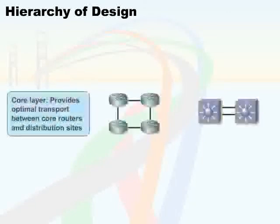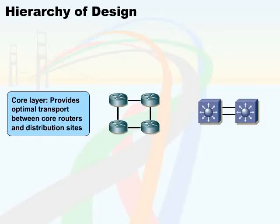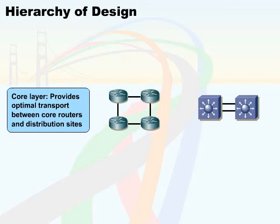There's a core layer, which is your true backbone that provides optimal transport between core routers or distribution sites. Typically, this is going to be the center point of your network.